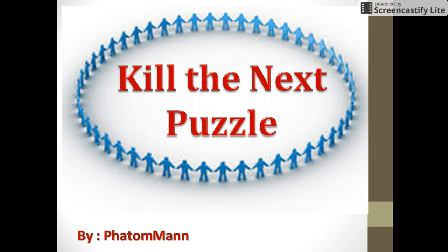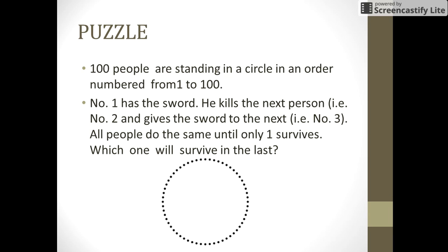Hello friends, let us see the puzzle of killing the next person. In this puzzle there are 100 people standing in a circle in an order where they are numbered from 1 to 100.